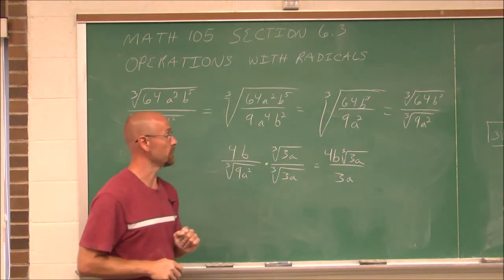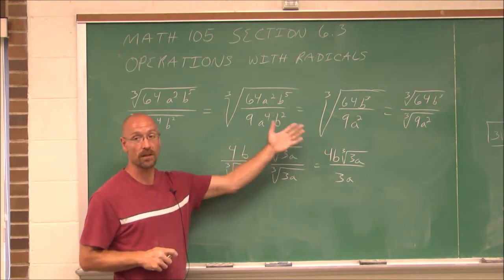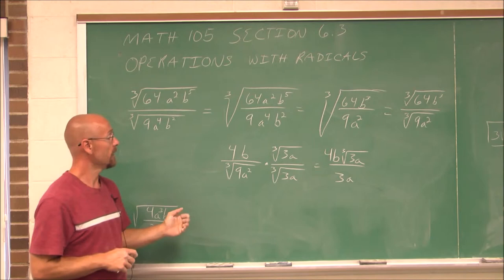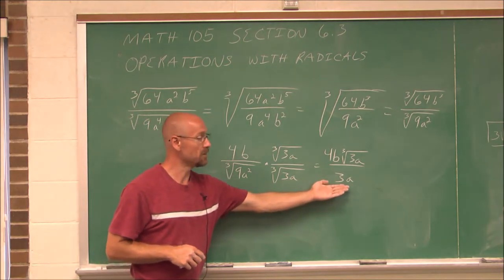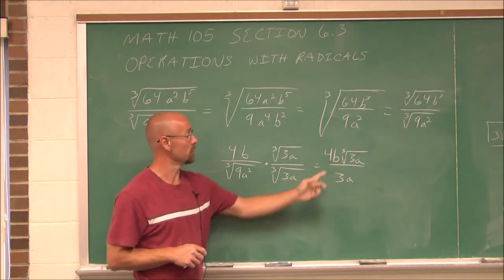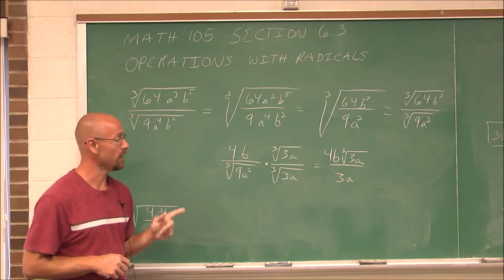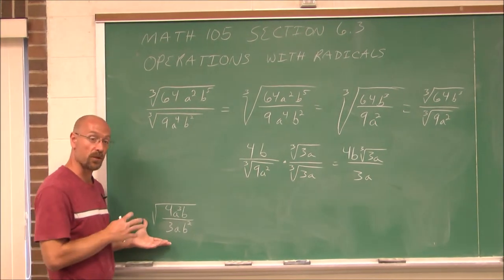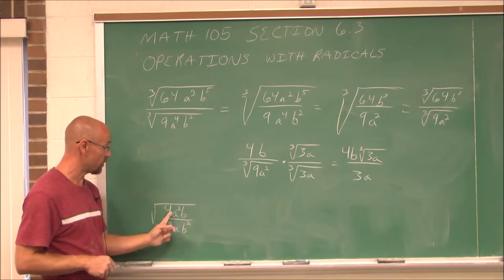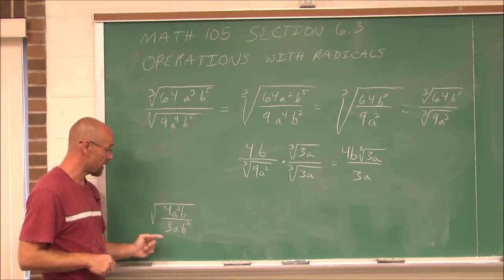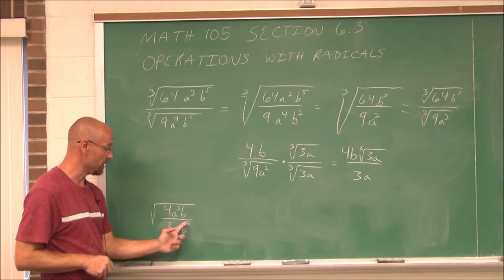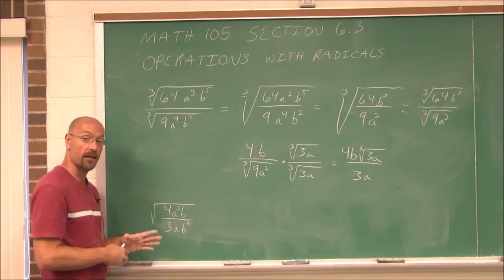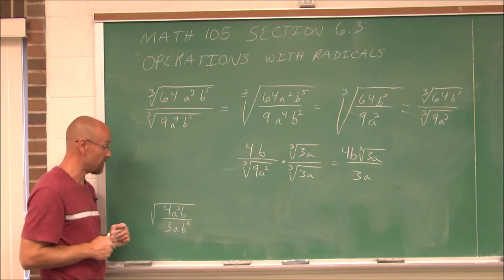This is the simplified version. That was a lot of work and a lot of steps, and you could have done different steps at different areas, but hopefully you still come to the same conclusion: 4b times the cubed root of 3a, divided by 3a. This next example I'm going to leave for you to attempt — it's the square root of 4a³b divided by 3ab², all under the radicand. Simplify and then rationalize that denominator.